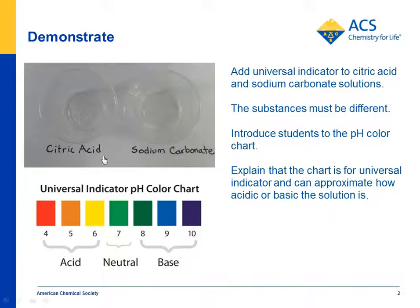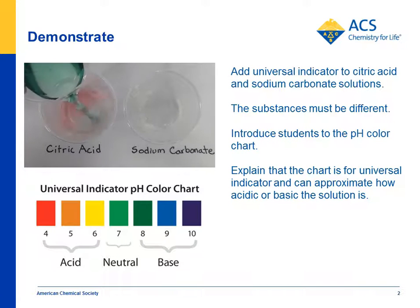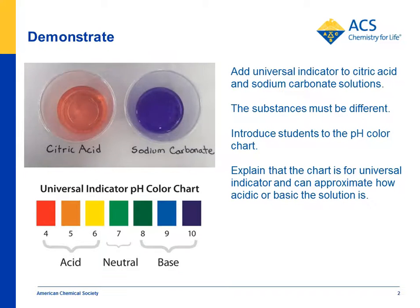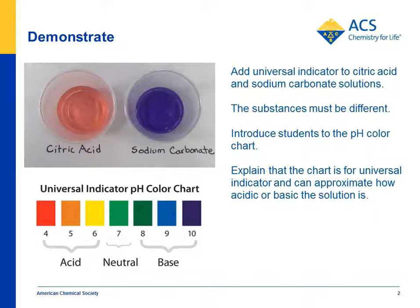With citric acid and sodium carbonate, you pour in a little universal indicator solution. Students will see that the citric acid turns pinkish — sort of cranberry colored — and sodium carbonate turns kind of purplish. From that, it's obvious that they are different substances, because they react chemically in different ways.